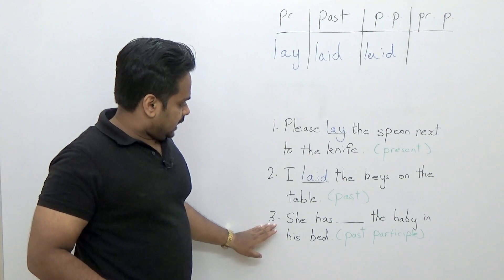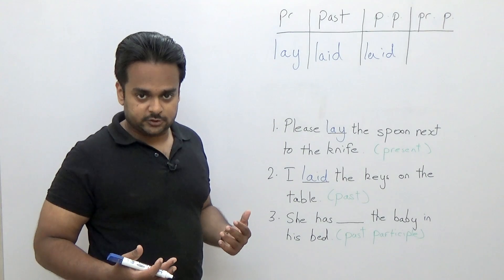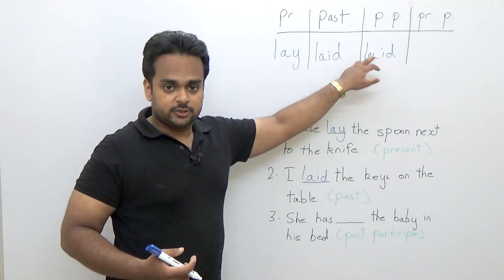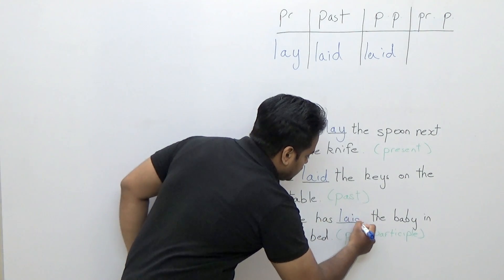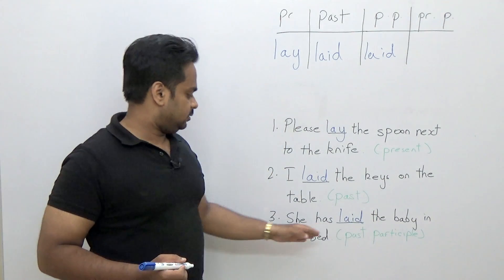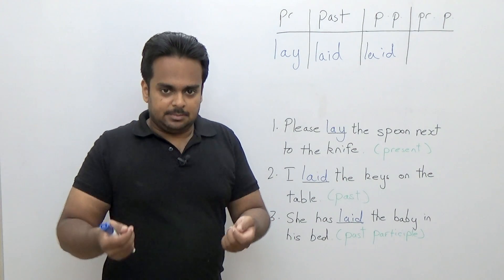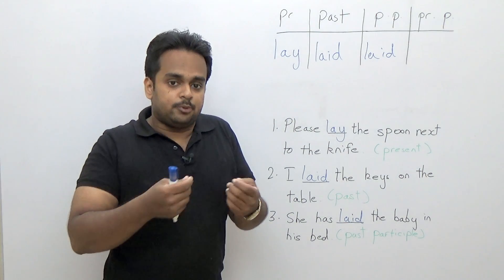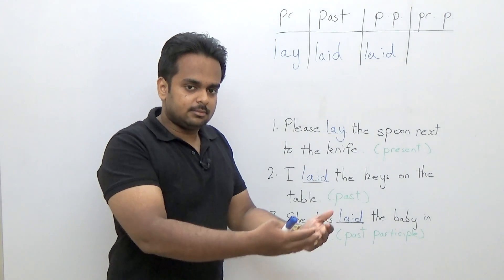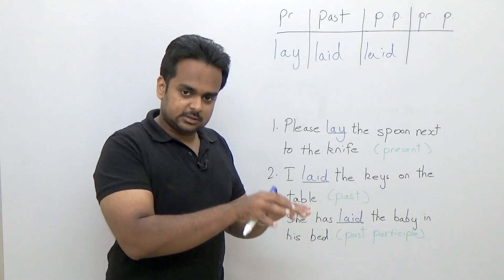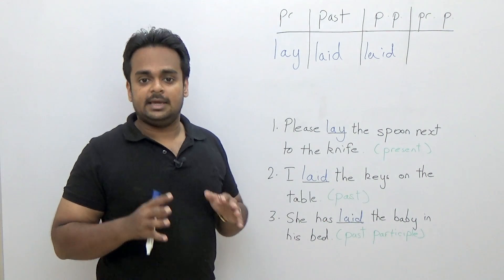Here's a sentence in the present perfect tense, which uses the past participle form: 'She has laid the baby in his bed.' That means she took the baby, wanted to put him to sleep, gently put him down in his bed and tucked him in — and now the baby is sleeping. So she has laid the baby in his bed.